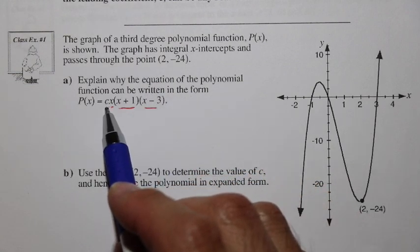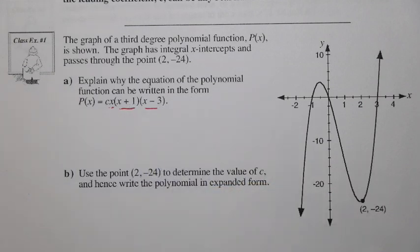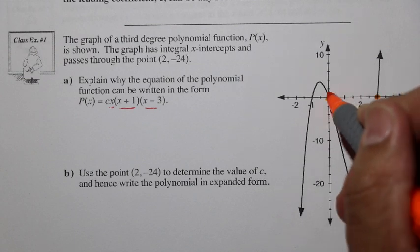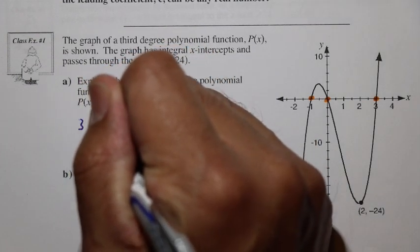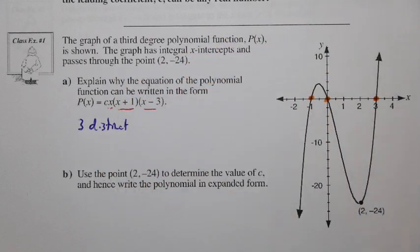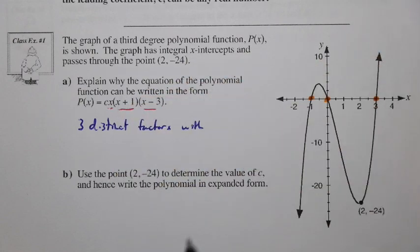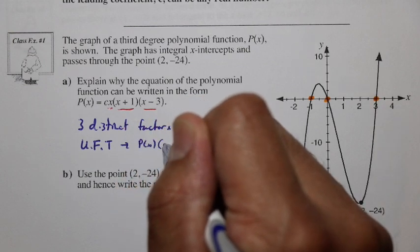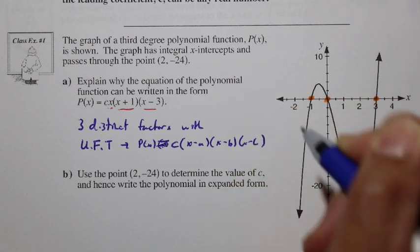Why is it just x, (x+1), and (x-3)? Looking at the graph, the x-intercepts are at 3, so (x-3) is a factor; at 0, so x is a factor; and at -1, so (x-(-1)) = (x+1) is a factor. That gives us three distinct factors for a third degree polynomial, so we're not looking for any more. The unique factorization theorem tells us we can write p(x) = c·(x-a)(x-b)(x-c) in that way.